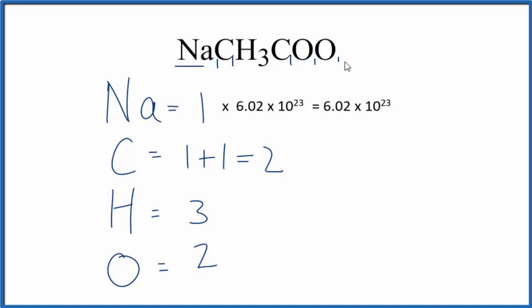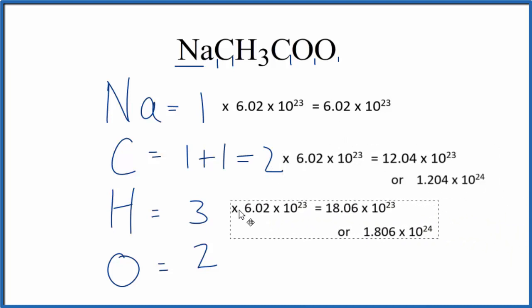For the carbon you would multiply it two times Avogadro's number. The hydrogen we multiply three times Avogadro's number, and then for the oxygen here we would just multiply two times Avogadro's number just like the carbon.